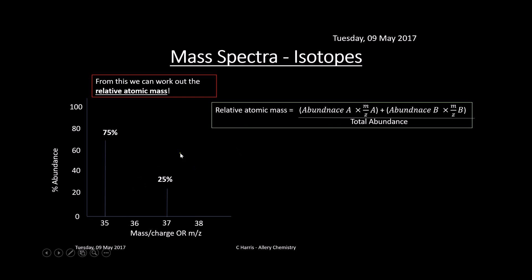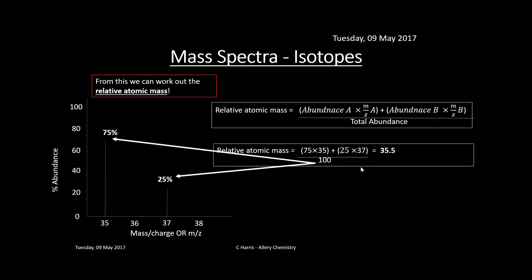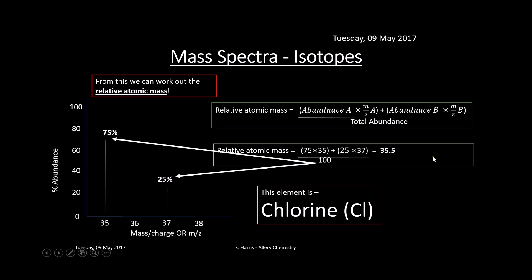To work out relative atomic mass, we take the abundance of isotope A multiplied by its M/Z, plus the abundance of isotope B multiplied by its M/Z, and so on for any additional isotopes. Then divide by the total abundance. In this case abundance is given as a percentage so we divide by 100. So: (75 × 35) + (25 × 37) divided by 100 gives us 35.5. Looking at the periodic table, the element with a relative atomic mass of 35.5 is chlorine.